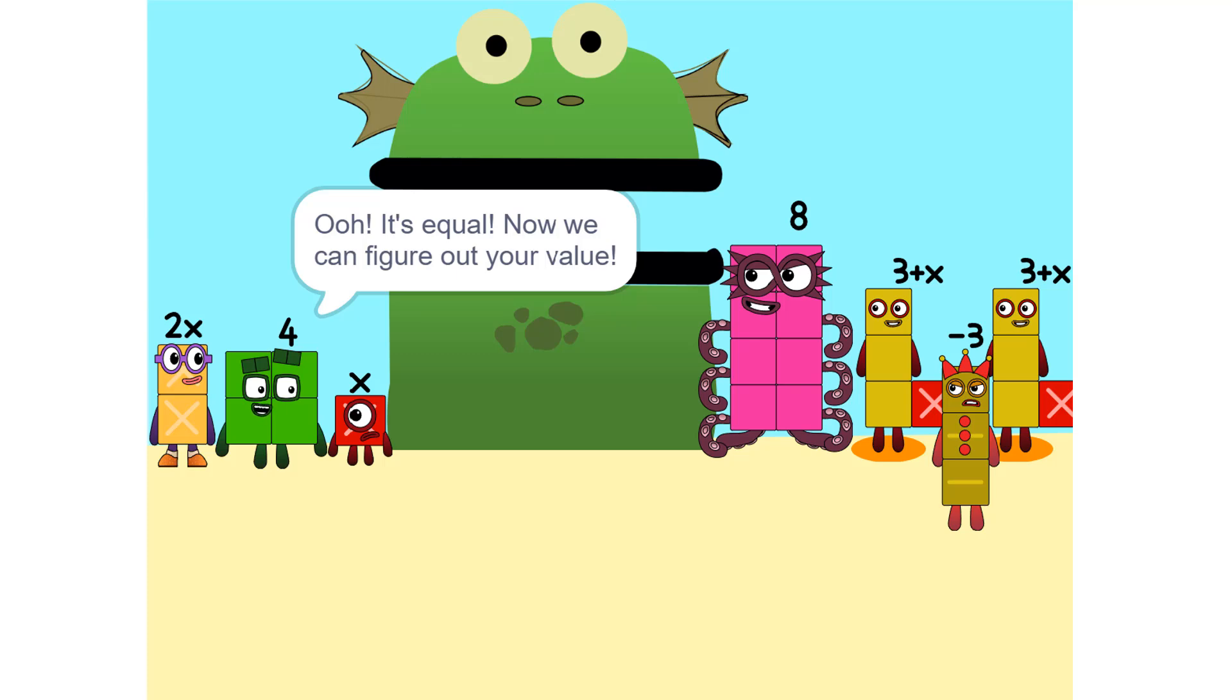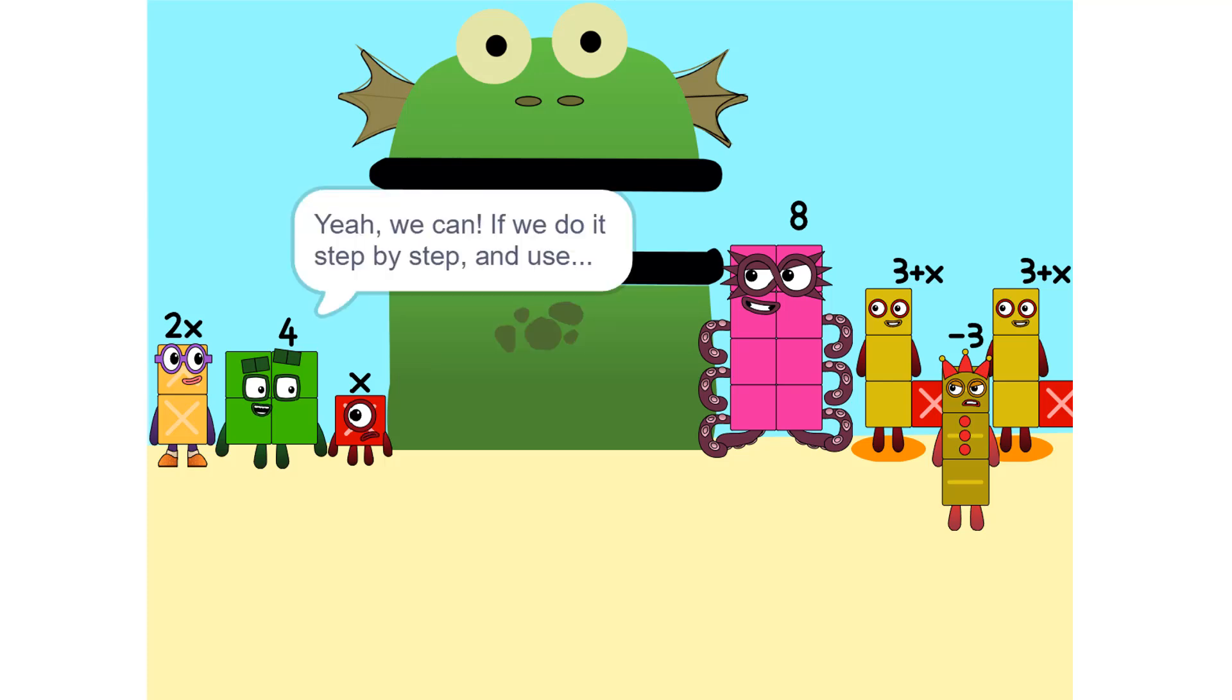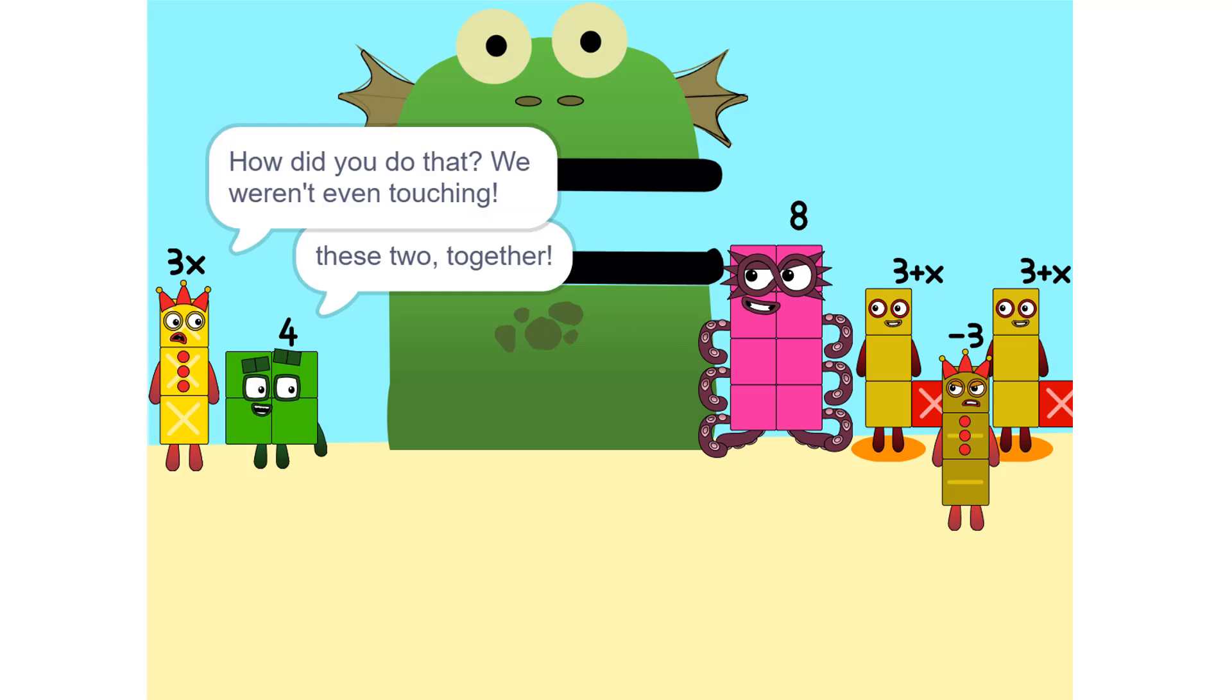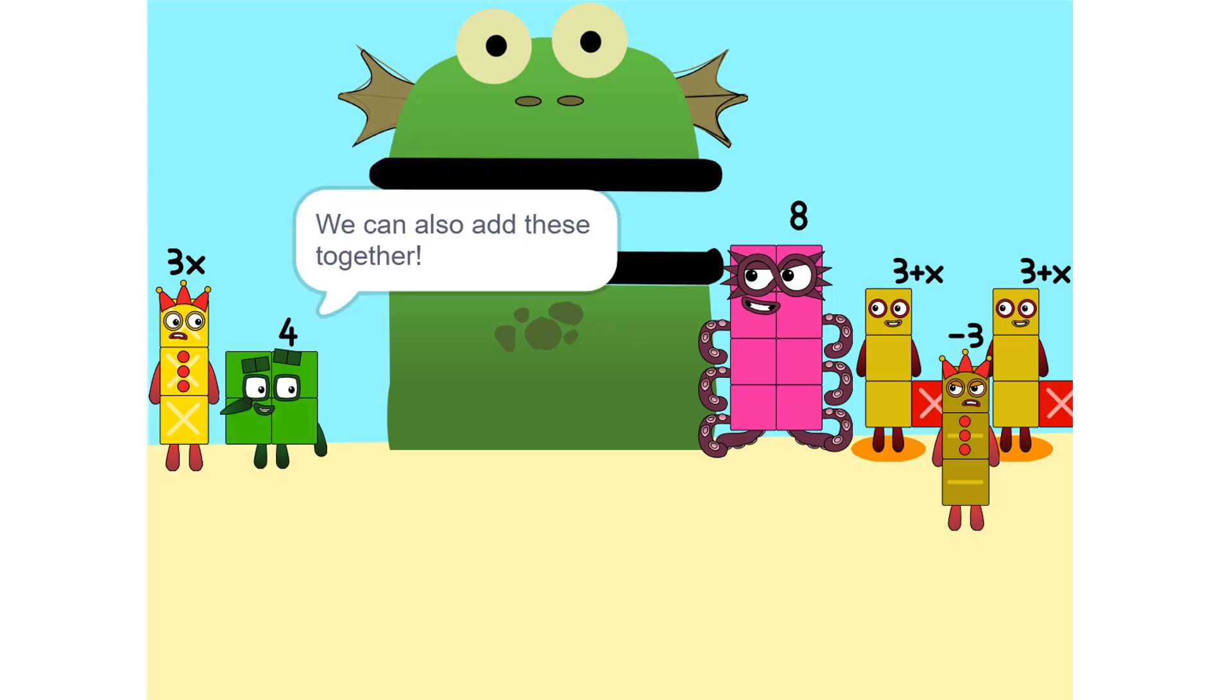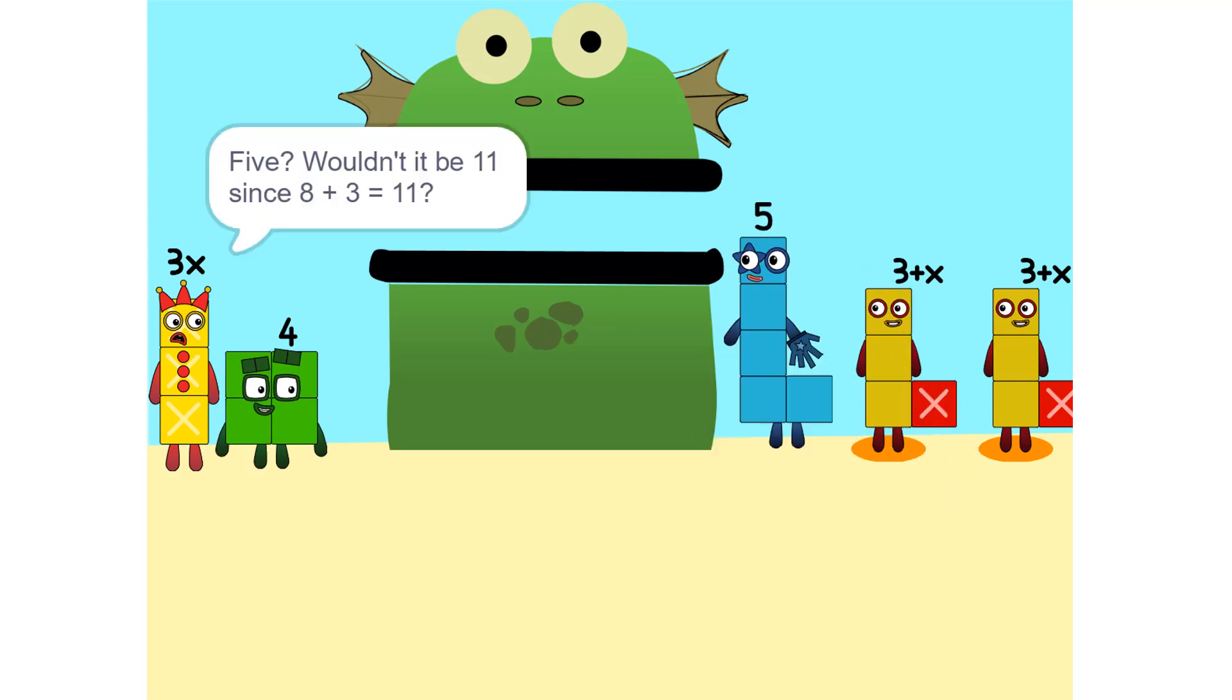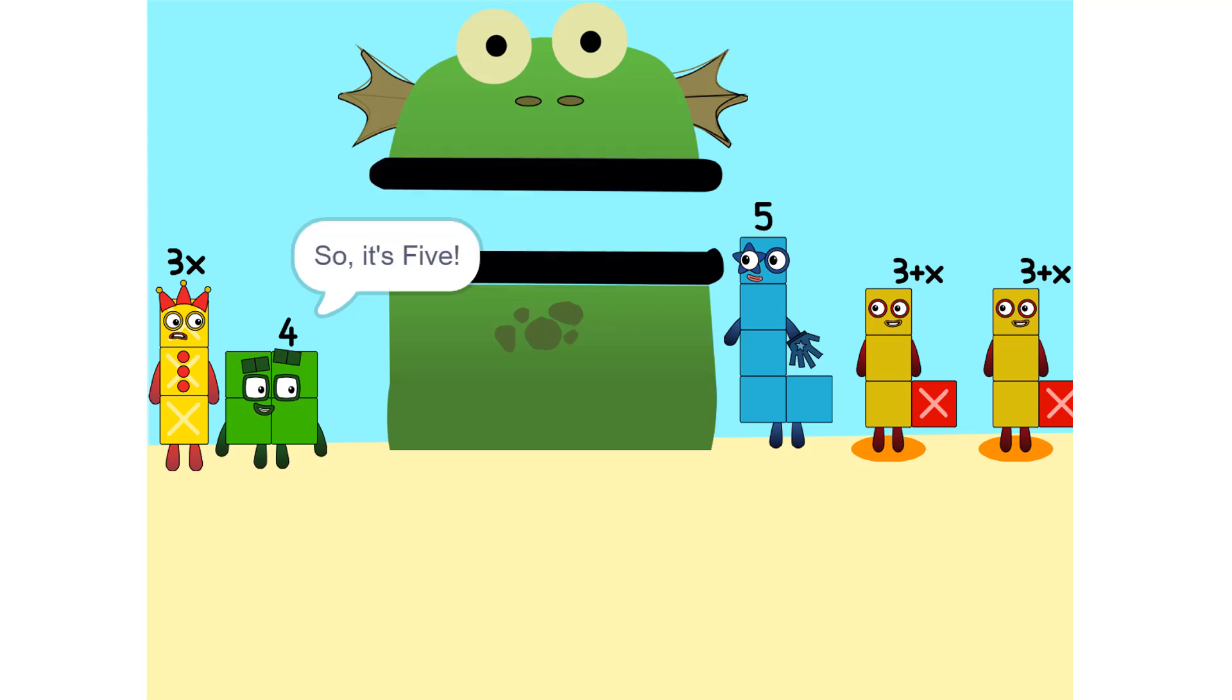Now we can figure out your value. But there are too many numbers. We'll never figure it out. Yeah, we can if we do it step by step. One thing we can do is add these two together. How did you do that? We weren't even touching. They don't have to be. We can also add these together. 5. Wouldn't it be 11 since 8 plus 3 is 11? No, because we're adding together 8 and minus 3, or negative 3. So it's 5.